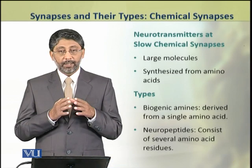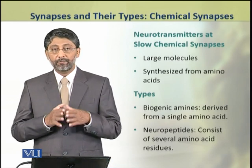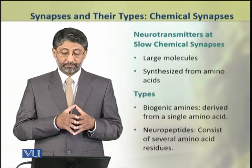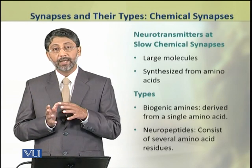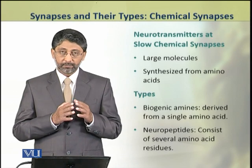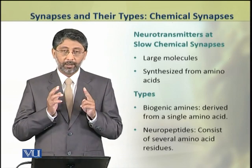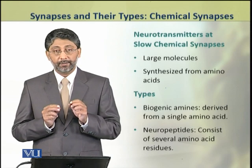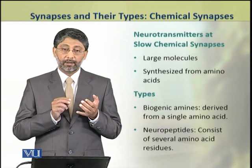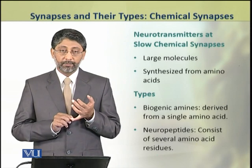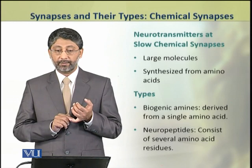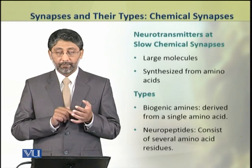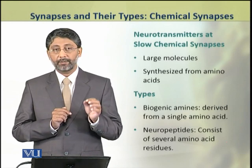The neurotransmitters involved in slow chemical transmission are generally large molecules, synthesized from amino acids. There are two major groups: biogenic amines, which are derived from a single amino acid, and neuropeptides, which consist of several amino acid residues.